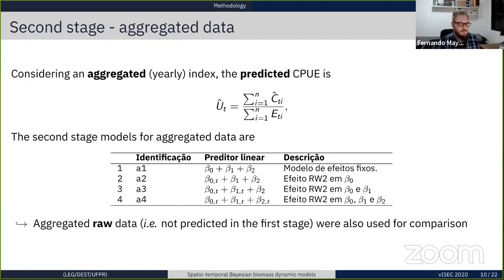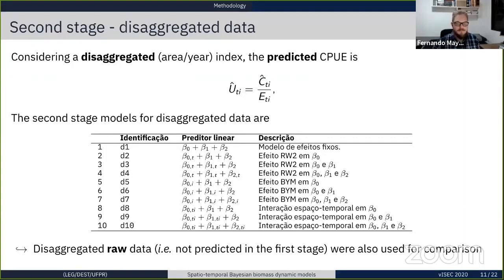When we use disaggregated data, the same way, we used the catch predicted in the first stage to model this disaggregated data, and here we could build 10 different models with different random space-time effects. We also used disaggregated raw data just for comparison.